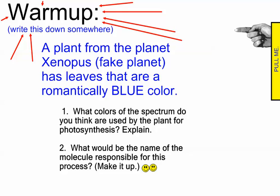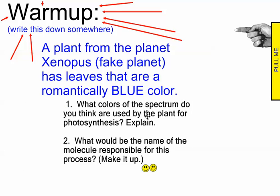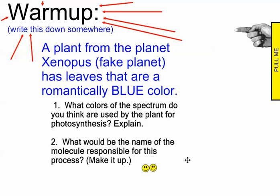Let's look at the absorption and action spectrums of photosynthesis, but first a really stupid question. A plant from the planet Xenopus, a fake planet, has leaves that are a romantically blue color. What colors of the spectrum do you think are used by the plant for photosynthesis? Please explain. And what would be the name of this silly molecule responsible for the process?